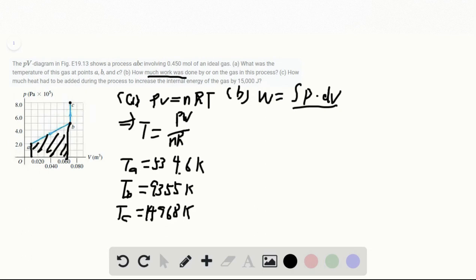And for process B, C, as you can see, the volume does not change. So the work is zero. So we only need to calculate the shaded area.